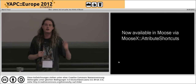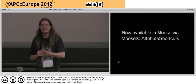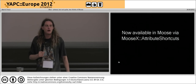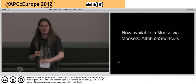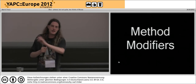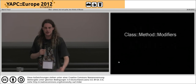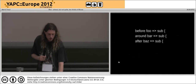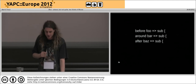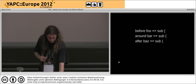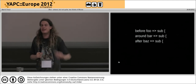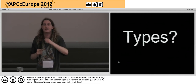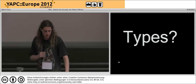MooseX::Attribute::Shortcuts provides is_lazy for Moose, so we're still within the realms of compatible with the Moose ecosystem, even if it's not exactly the same feature you get in core Moose. For method modifiers, just use Class::Method::Modifiers. The only interesting thing you have to do is stuff them into an array and replay them for role application to work.